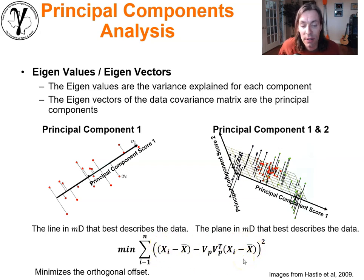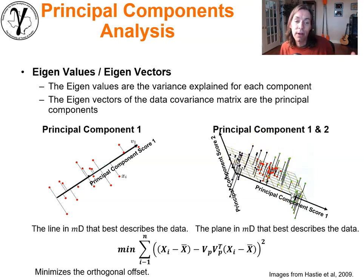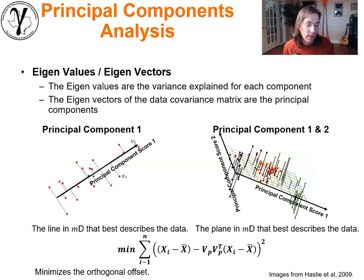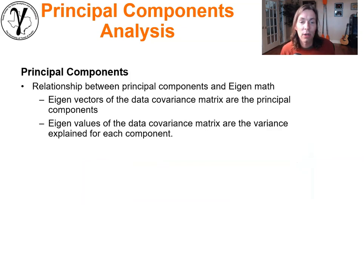The squared difference is simply the difference between the projections into principal components versus the original data. In maximizing the variance described within the principal component plane, we're minimizing the variance of what we have not explained. We're minimizing the orthogonal offset — we can think of it as a multi-dimensional error term.